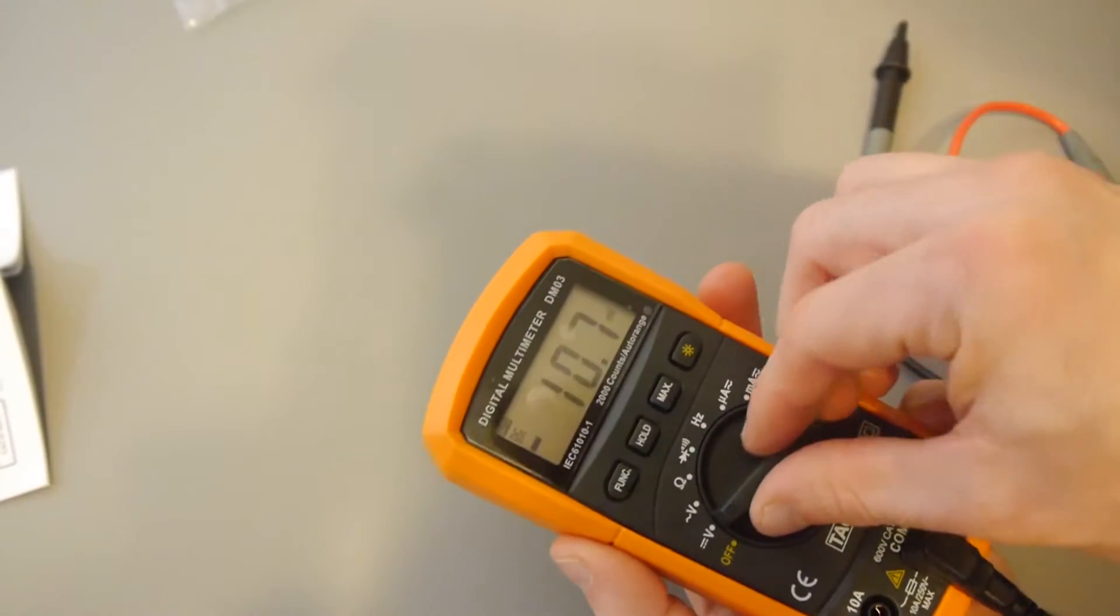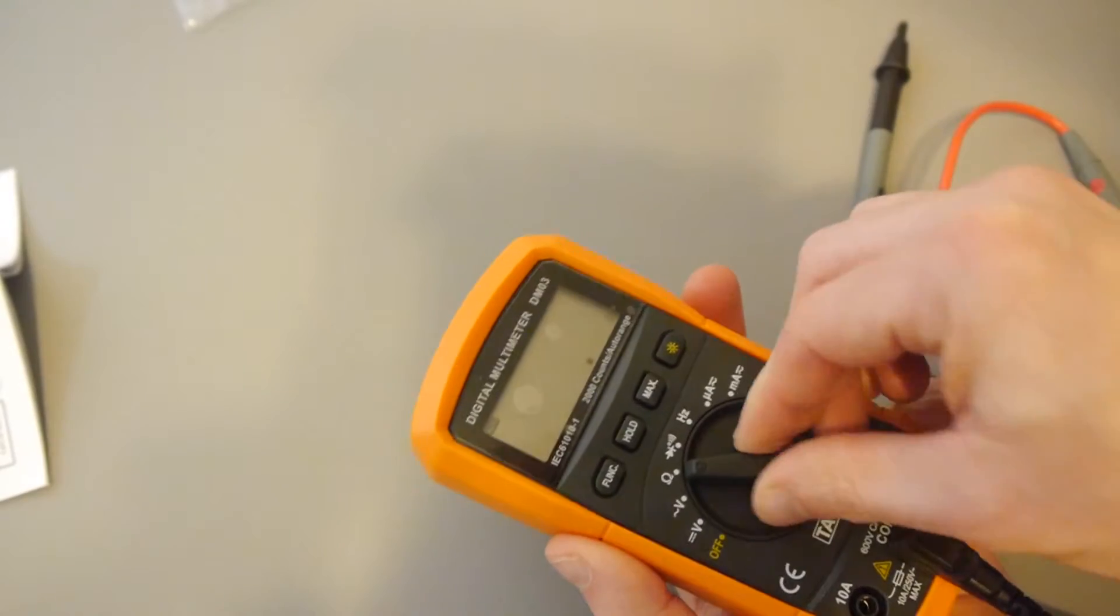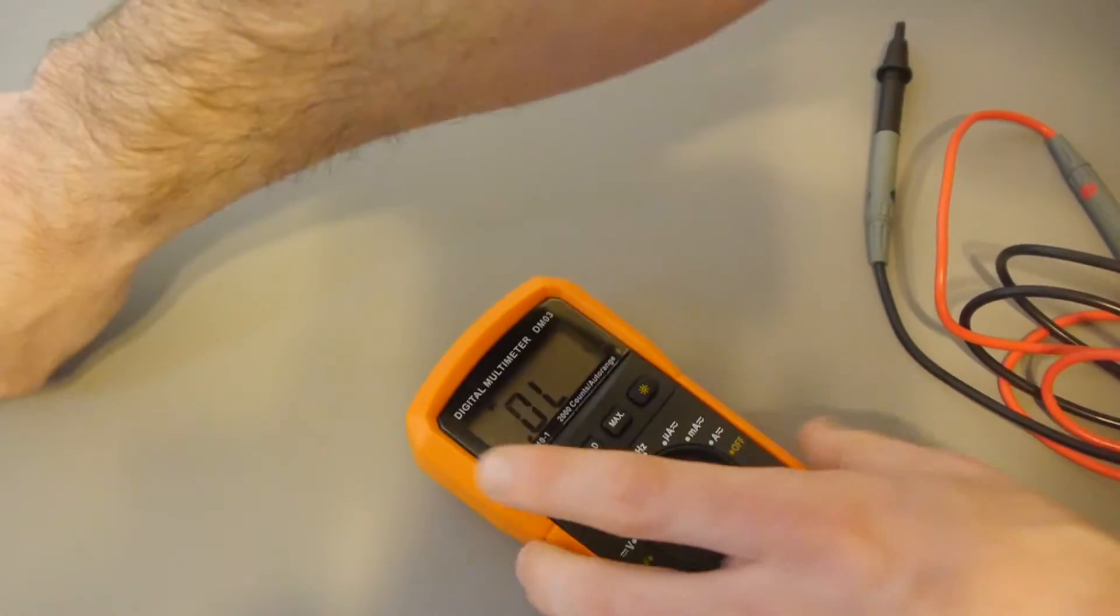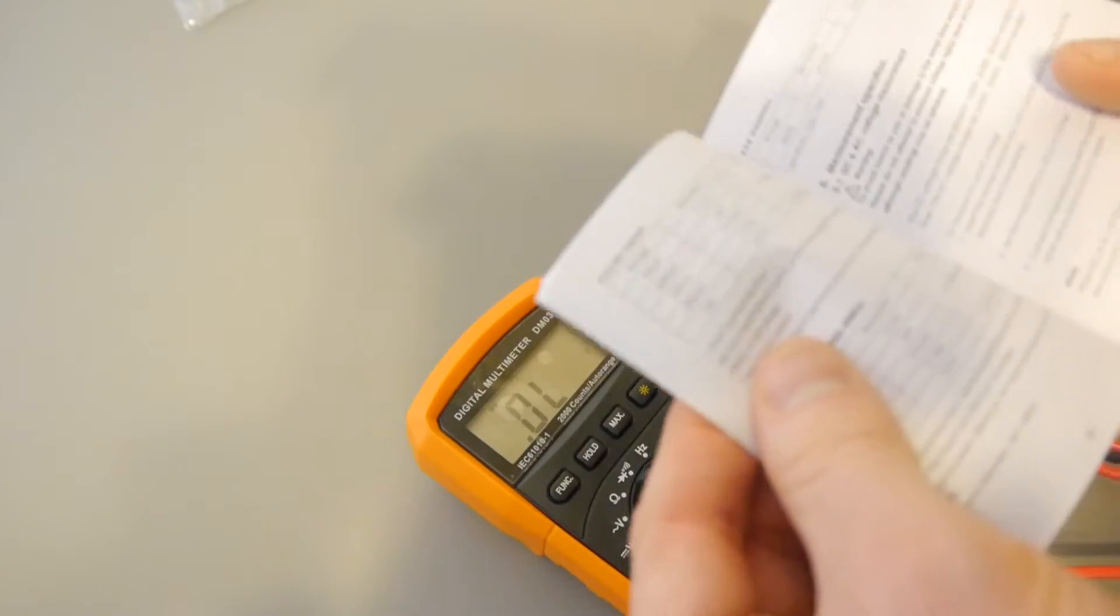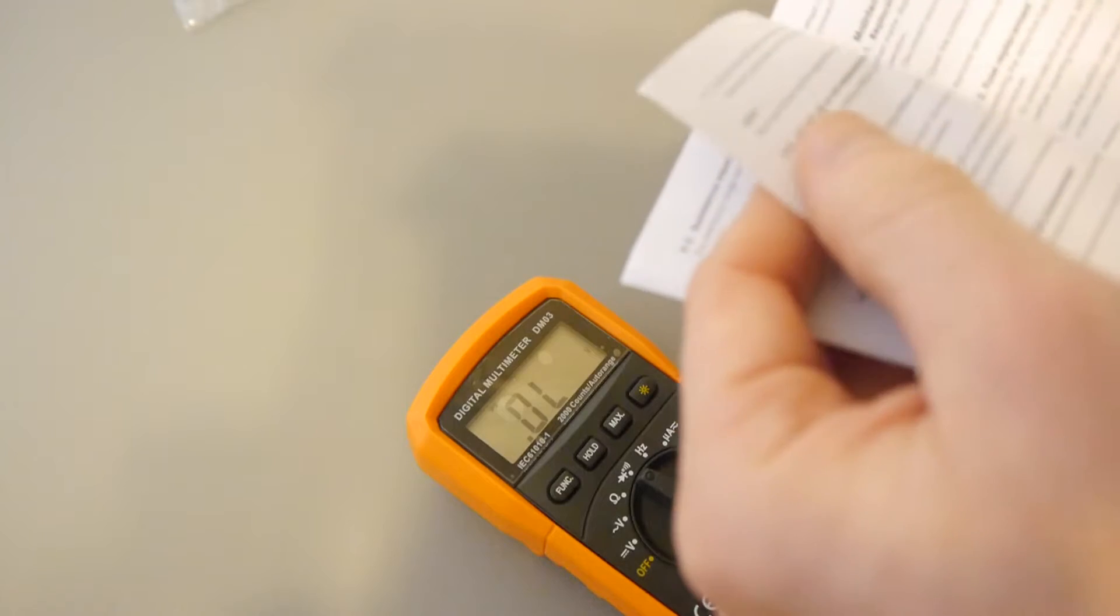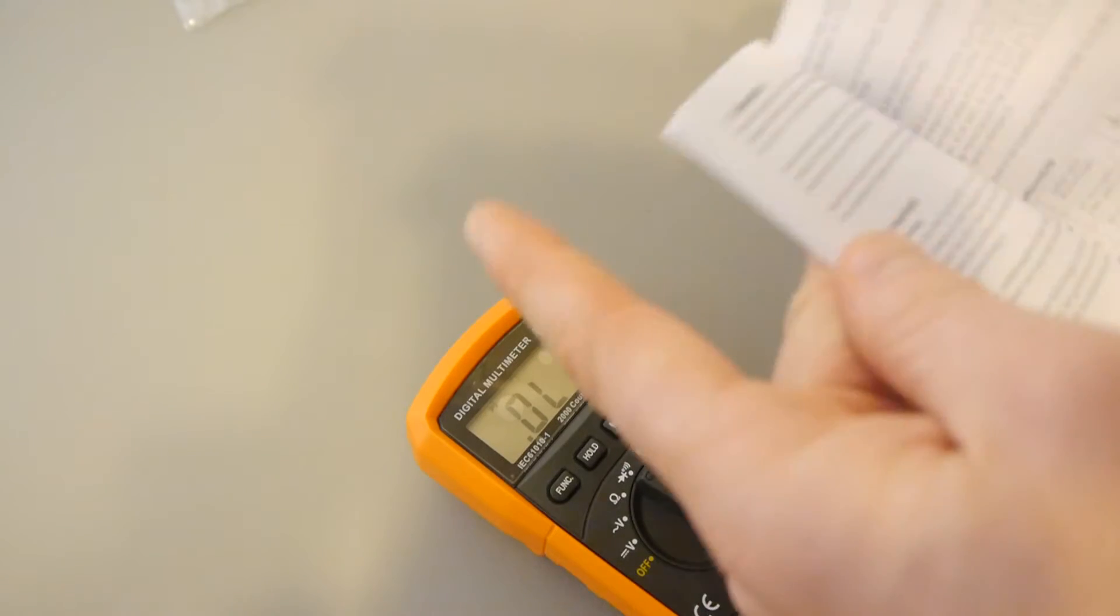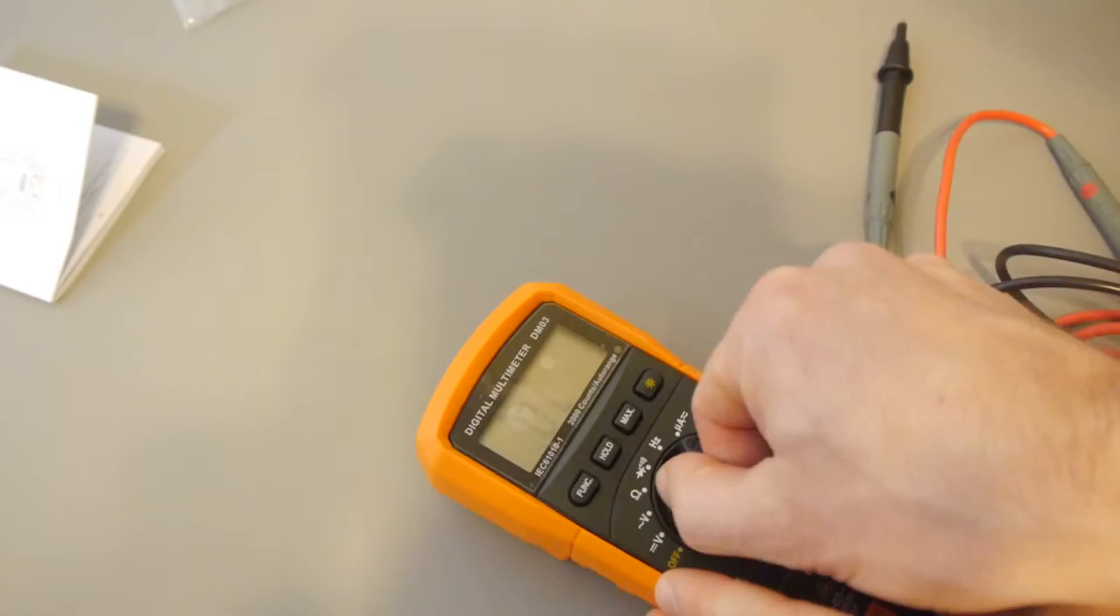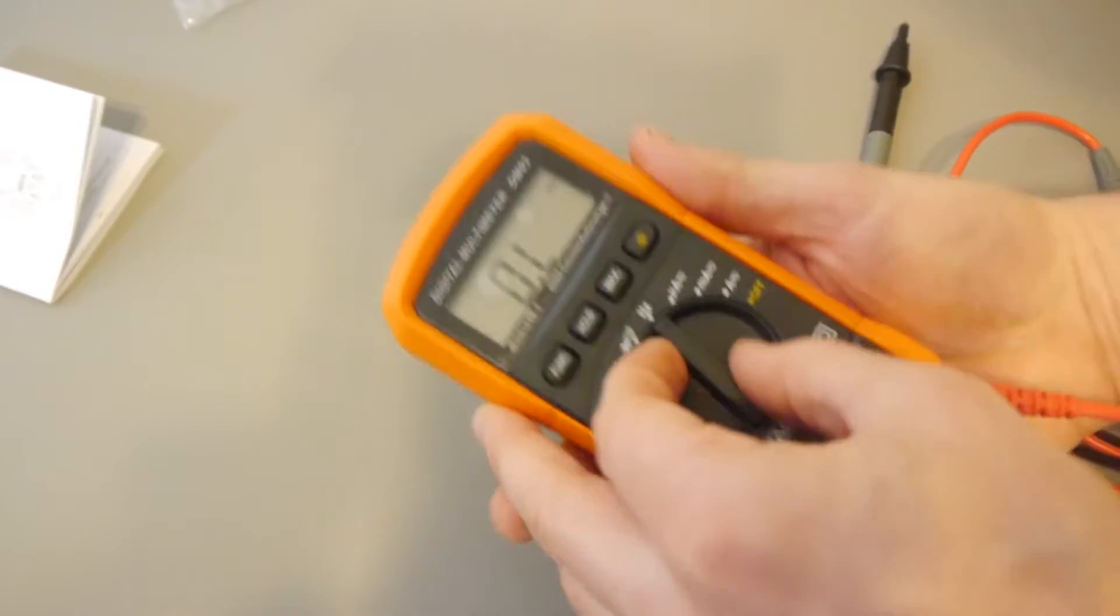So, we've got direct current. We've got alternating current. We've got resistance. We've got this one I wasn't sure about, actually. It says here it's for diode and continuity. This was a diode check. It's not something I've ever used before. We've got hertz, and then we've got current.